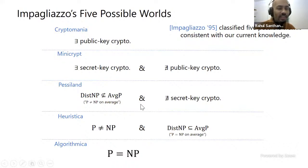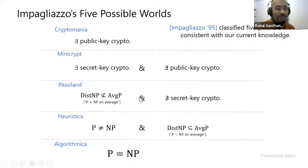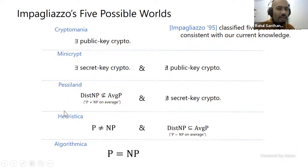Then there's Minicrypt where one-way functions exist but public key cryptography doesn't. Despite the fact that Algorithmica and Cryptomania are very hard to rule out, we have some hope of reducing the possibilities and ruling out these intermediate worlds. We can't prove NP ≠ P, so we consider the pH (polynomial hierarchy) versions of these five possible worlds.